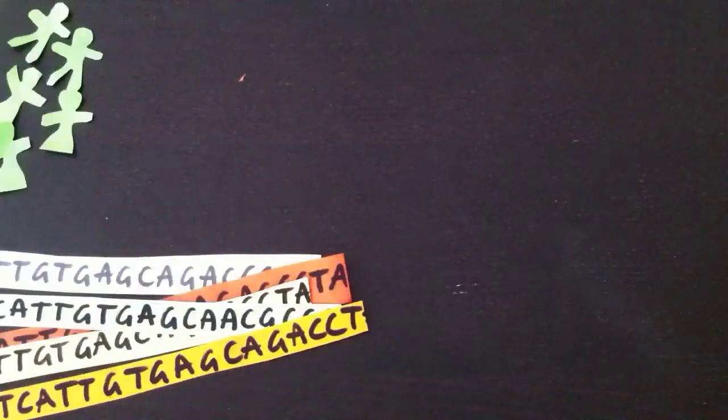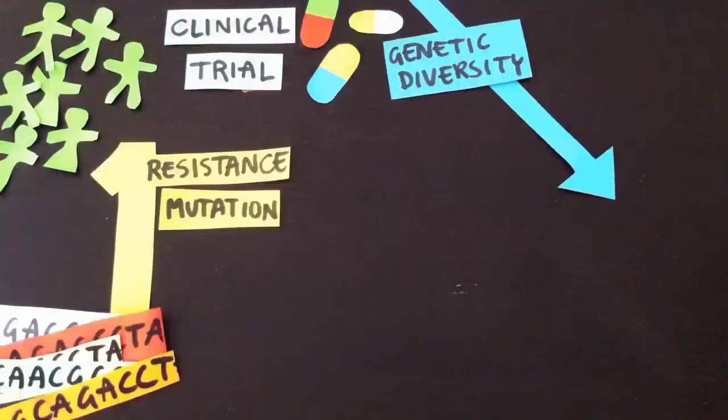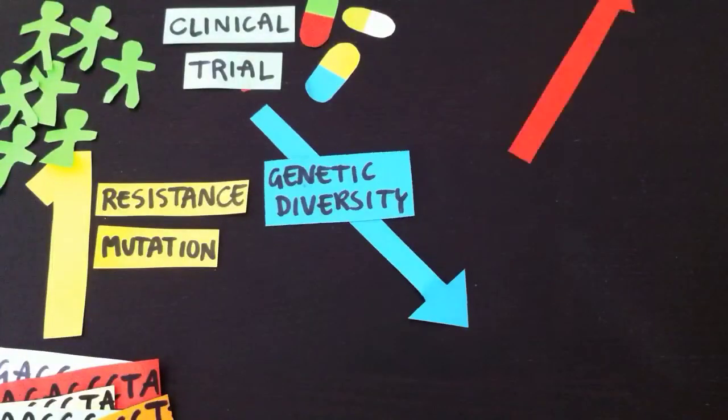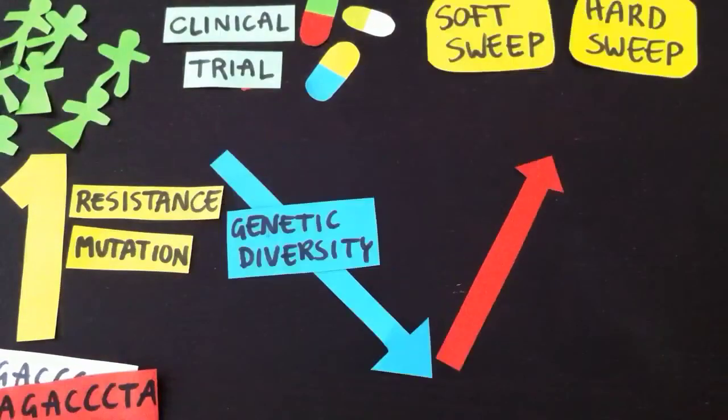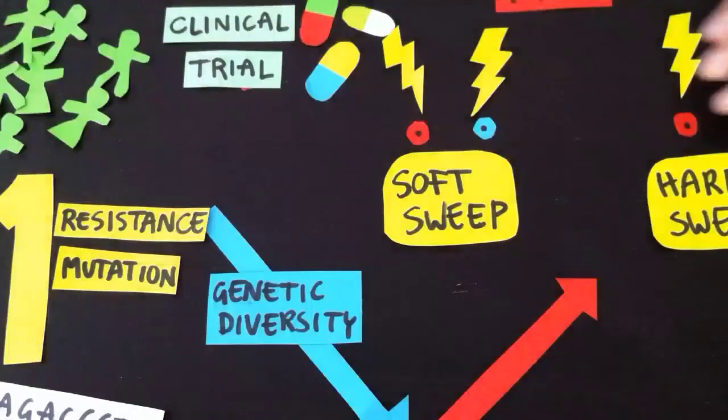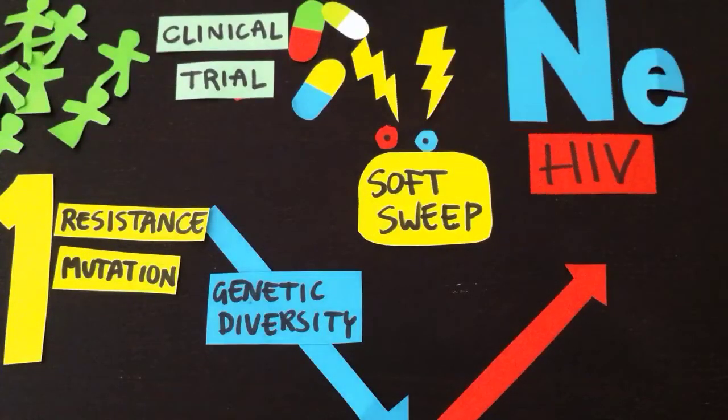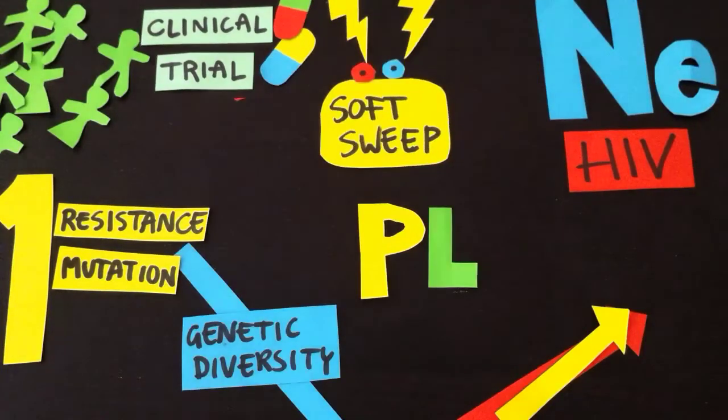By studying viral sequences from patients in a clinical trial, we could see that resistance mutations fix one at a time. We also observed that genetic diversity is lost but then recovers again, and we observed both soft and hard sweeps. We used population genetics theory to learn about HIV, for example, to estimate the effective population size of the virus.